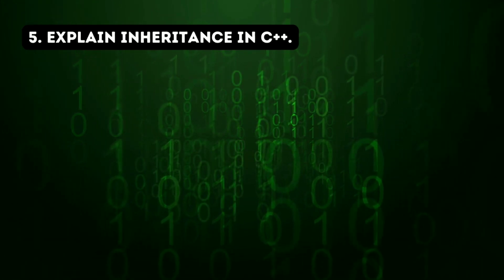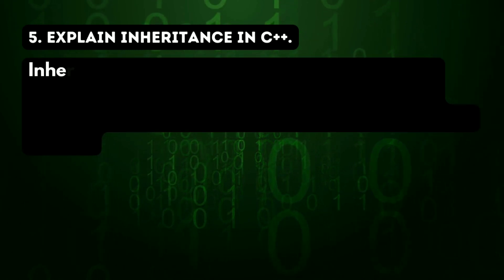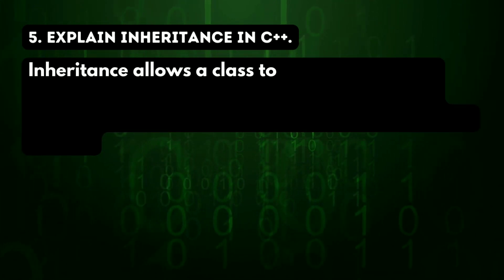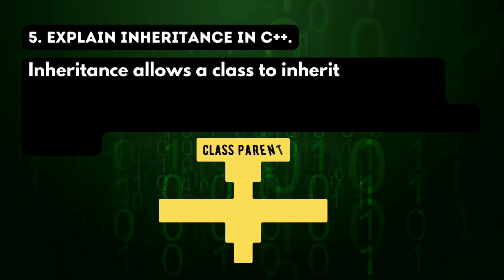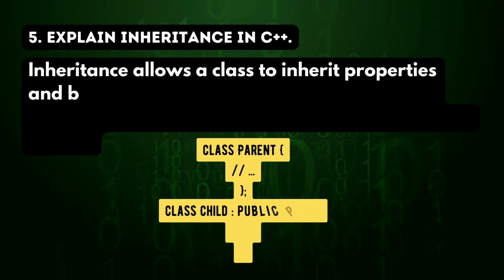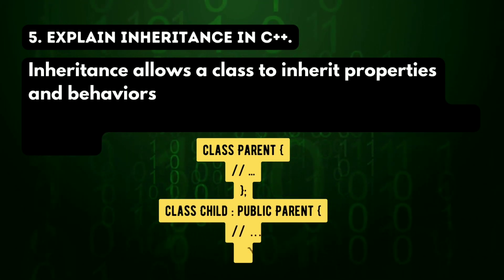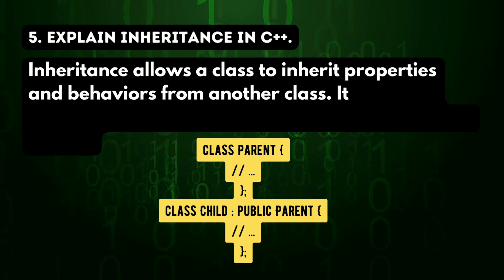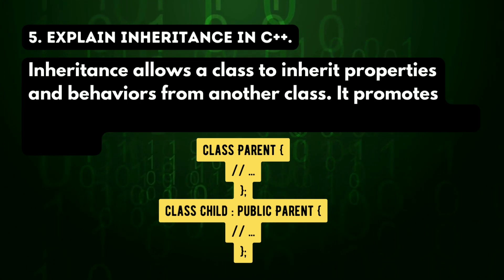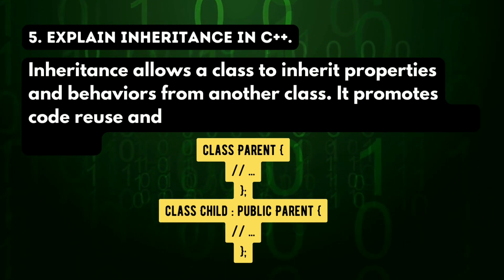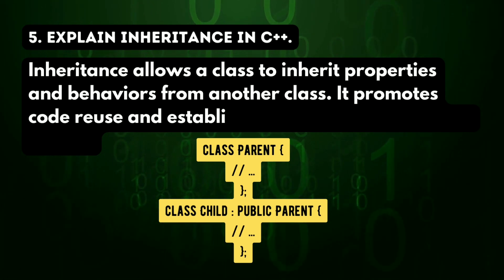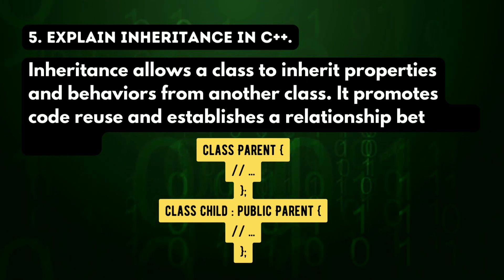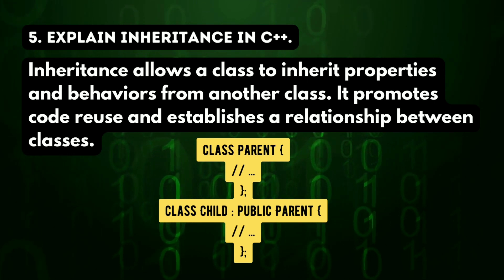Fifth question: explain inheritance in C++. Inheritance allows a class to inherit properties and behaviors from another class. It promotes code reuse and establishes a relationship between classes.